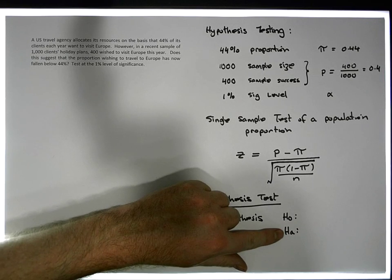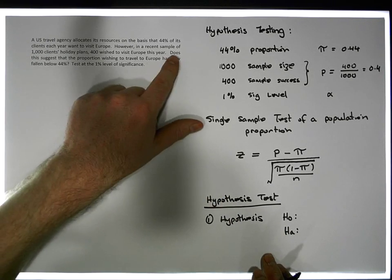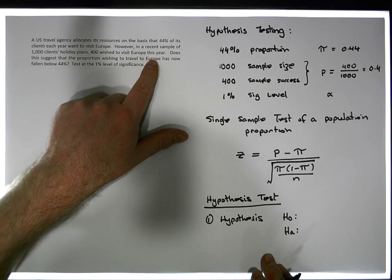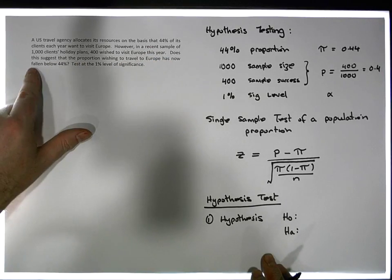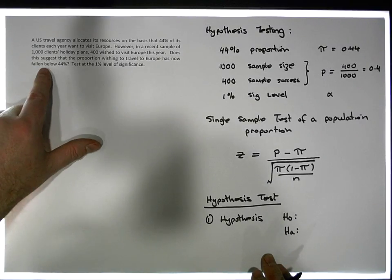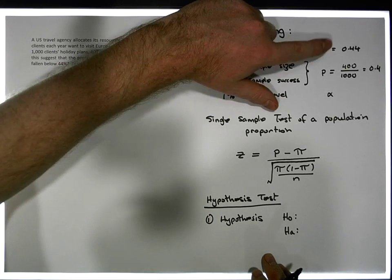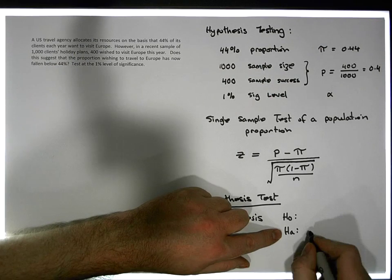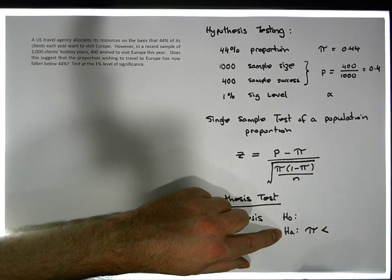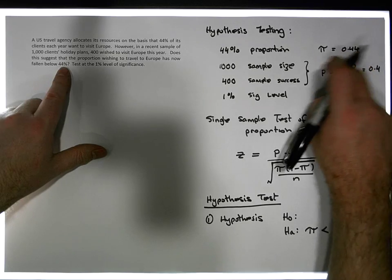Now, what we always want to try to prove is always in the alternative. So what is he asking us? He's saying, does this suggest that the proportion wishing to travel to Europe has now fallen below? Falling below means less than. And don't forget, a hypothesis is always a statement about the population parameter. So really what we're saying is, is there evidence to suggest that the population parameter has fallen below, is less than 44%.